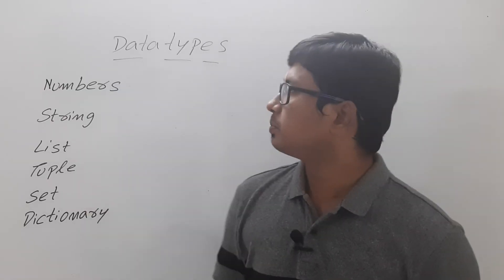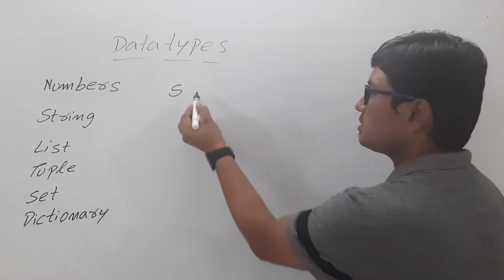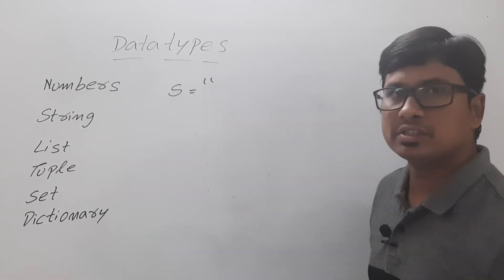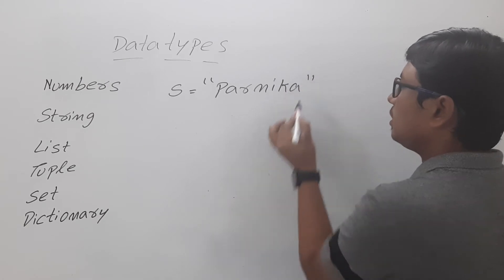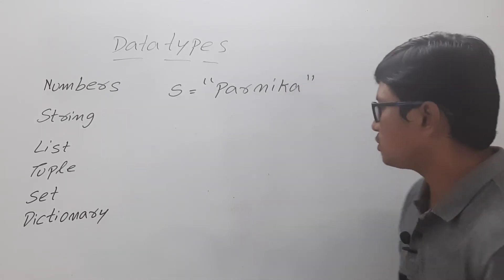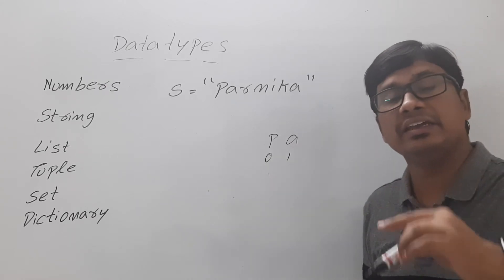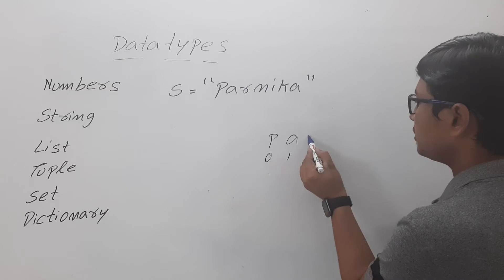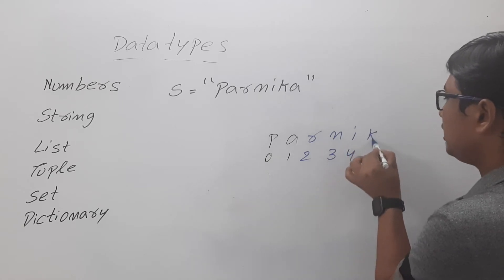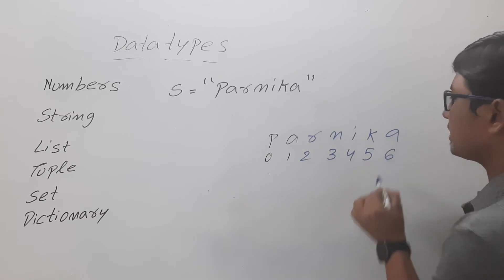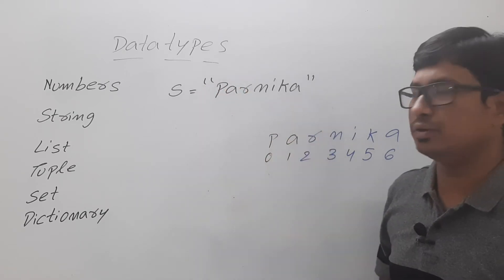Now let me discuss the string data type. You can give the variable name s and assign s = 'parnika' using double quotes or single quotes. A string is a collection of characters: p is stored at index 0, a at index 1, r at index 2, n at index 3, i at index 4, k at index 5, and a at index 6, because array indices always start from zero.